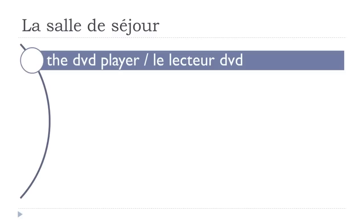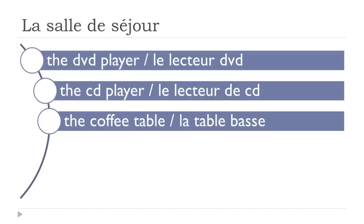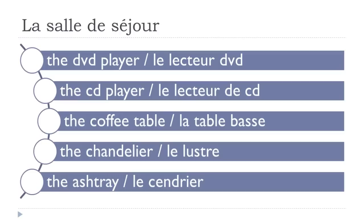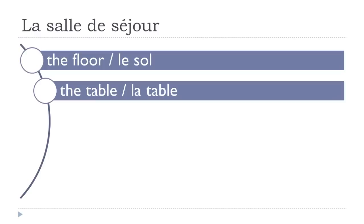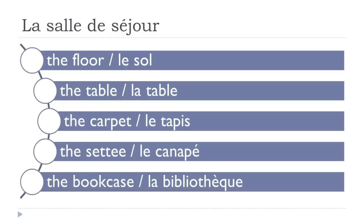'Le lecteur DVD' (DVD player), 'le lecteur de CD' (CD player), 'la table basse' (coffee table), 'le lustre' (chandelier), 'le cendrier' (ashtray). 'Le sol' (floor/ground), 'la table' (table), 'le tapis' (rug — final S not pronounced), 'le canapé' (sofa), 'la bibliothèque' (bookcase/library).